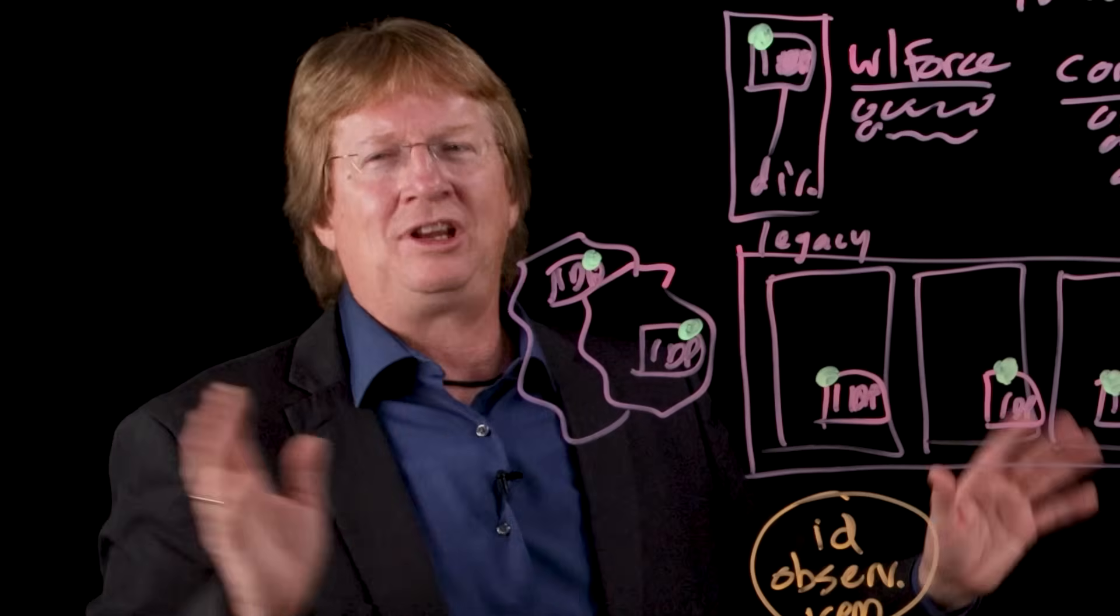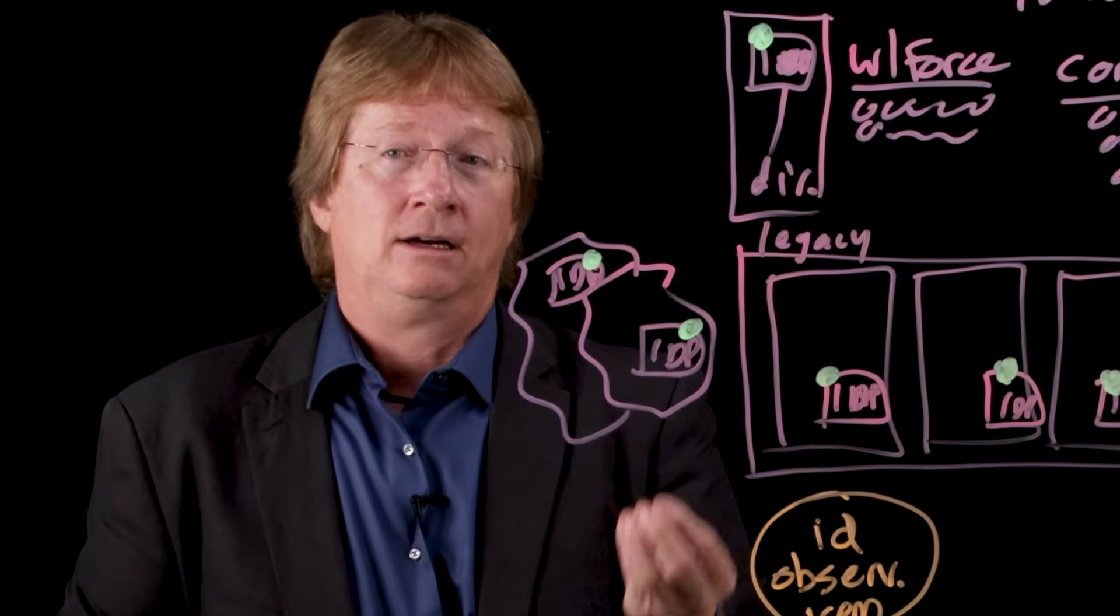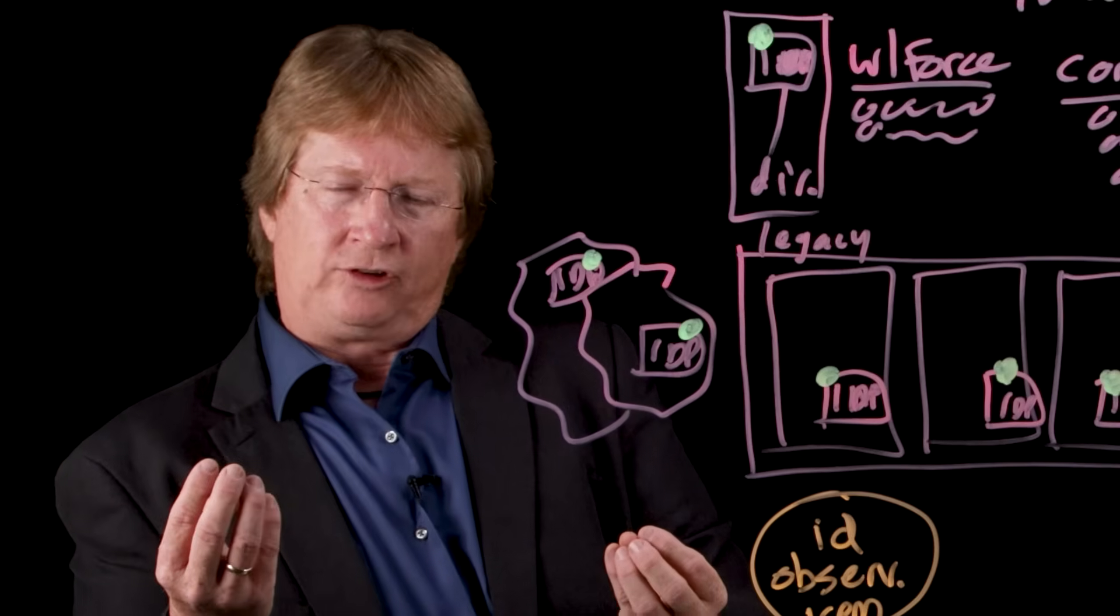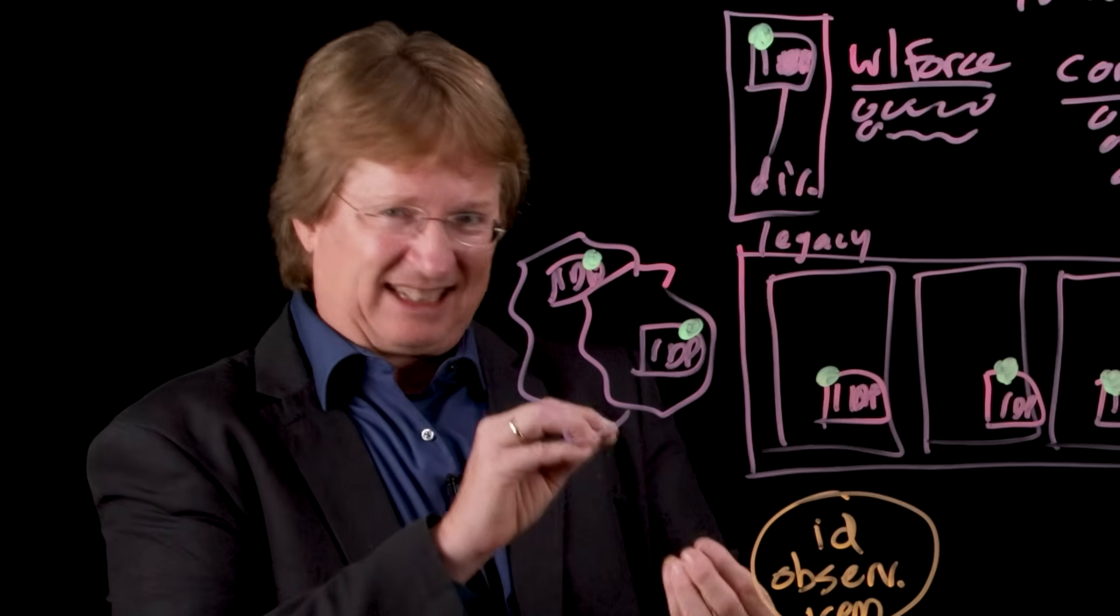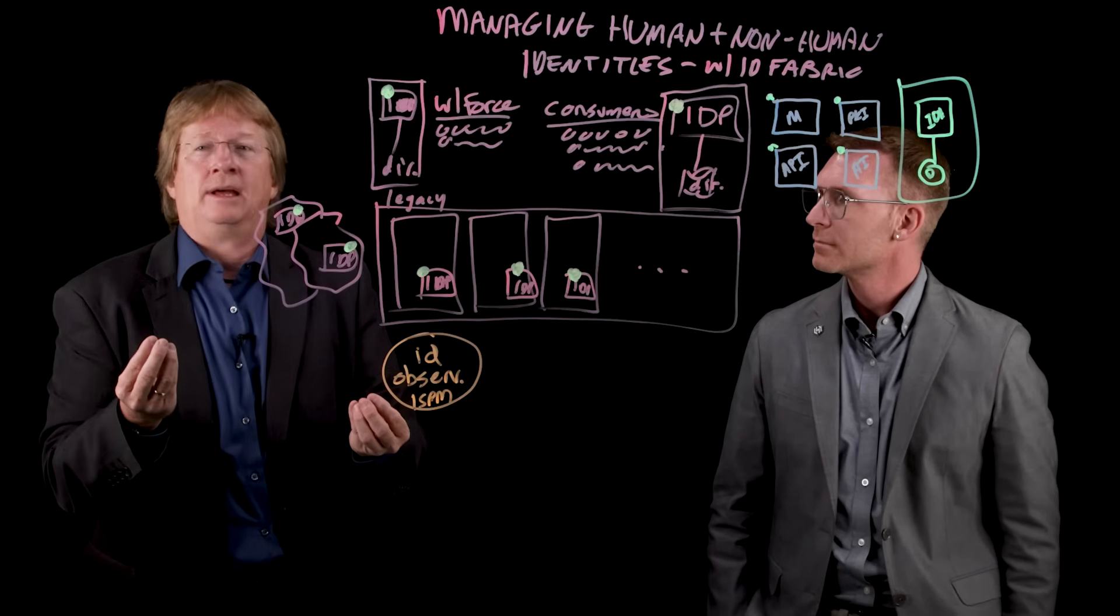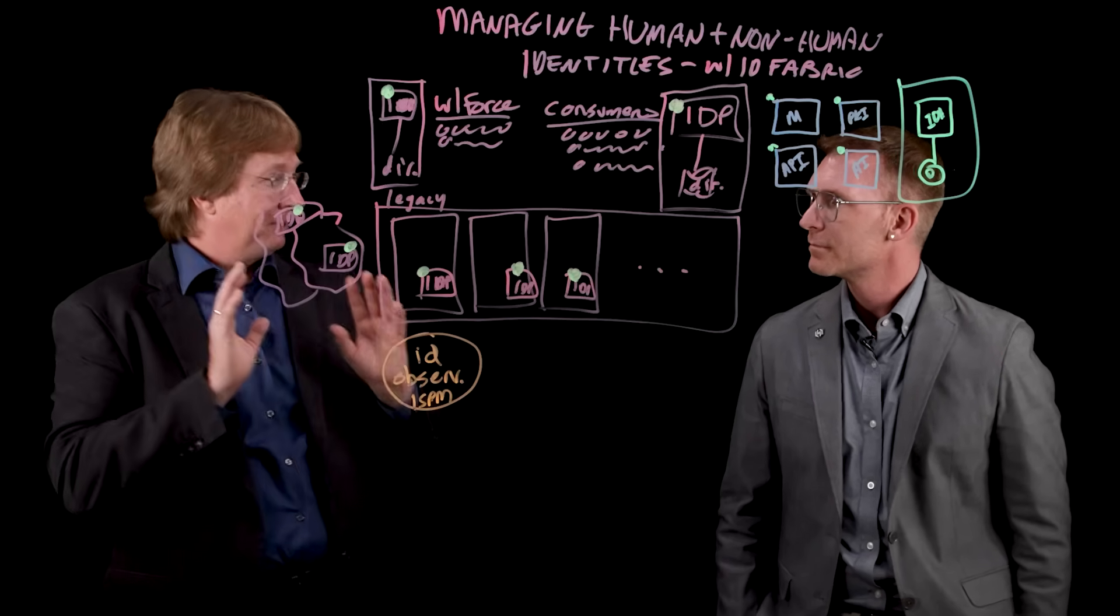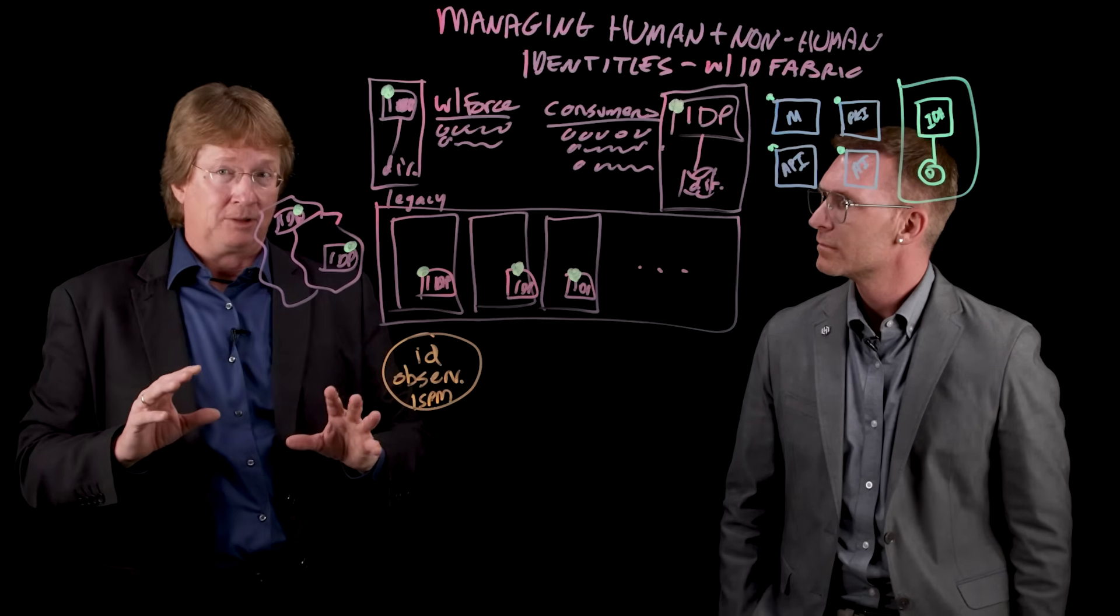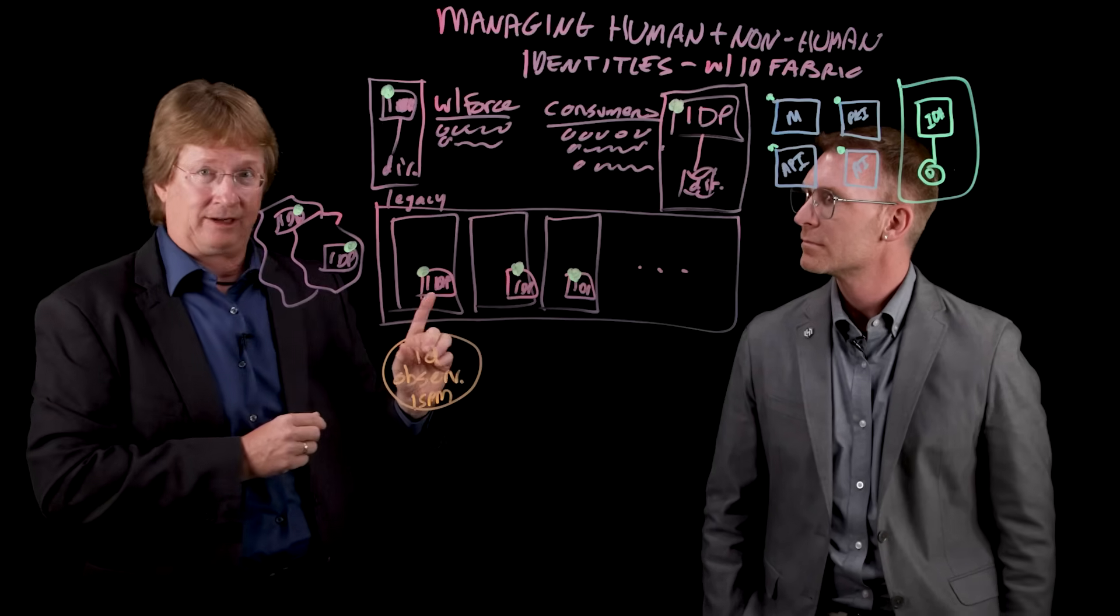The even bigger piece of identity observability is being able to watch how the non-human and human identities are interacting, which nobody's been able to do until recently. I'll give you a good example. You'll have a non-human machine ID on a server getting access to back-end systems, and all of a sudden 20 human users start regularly using that same non-human service account. And of those 20 human identities, eight of them were inactive for the previous year and a half. That is clearly a potential problem, but nobody's had that level of observability, not just human and non-human, but how they're interacting. That's the first use case.